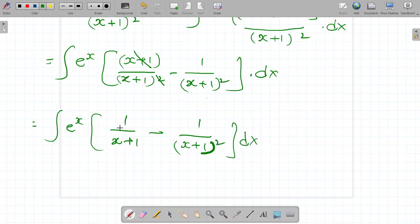Here, let us assume f of x is equal to 1 by x plus 1. What happens? f dash x is equal to minus 1 by 1 plus x whole square.